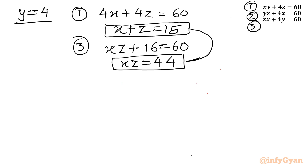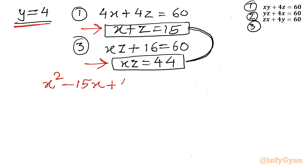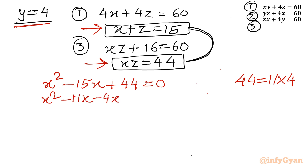Now see the sum of roots is x plus z equals 15, and the product of roots is xz equals 44, where x and z are the roots. Let us frame one quadratic equation to find x and z when y is 4. I can write: x squared minus 15x plus 44 equals 0. Since 44 equals 11 times 4, I can factor: x squared minus 11x minus 4x plus 44 equals 0, giving x minus 11 times x minus 4 equals 0.